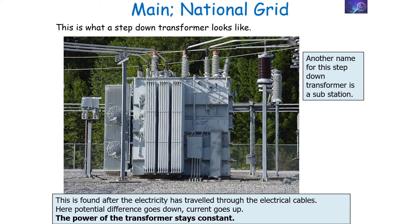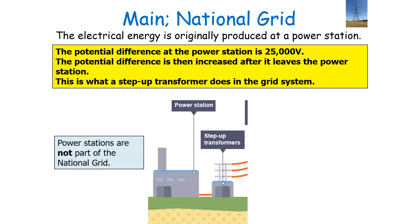A step-down transformer looks like the following. Another name for a step-down transformer is a substation. These types of transformers are found after the electricity has travelled through the transmission cables. In a step-down transformer the potential difference goes down, the current goes up, but the power of the transformer stays constant.